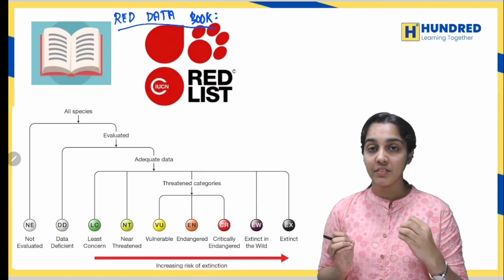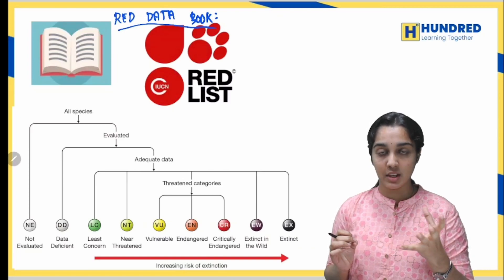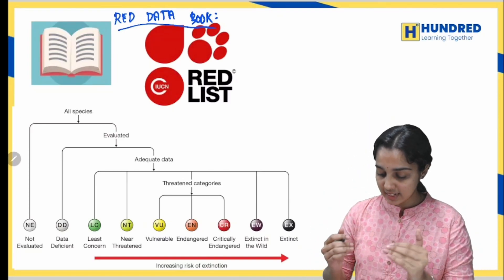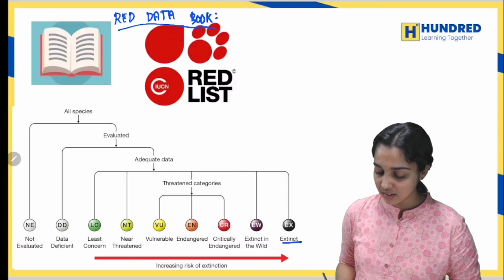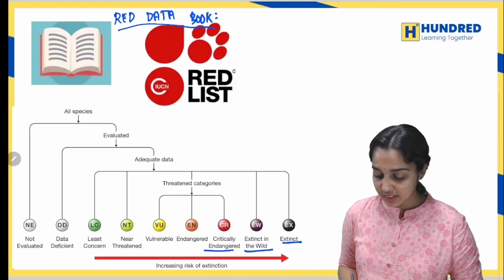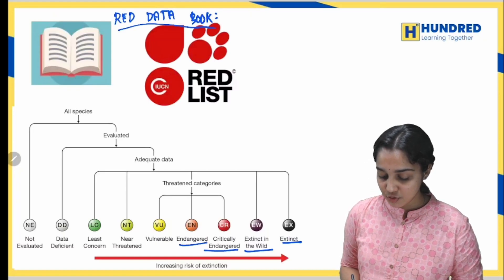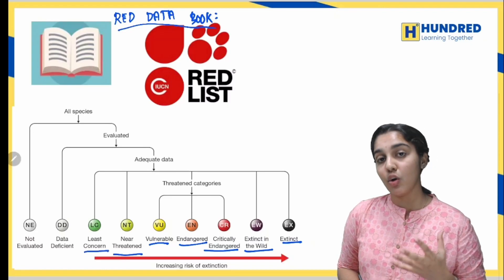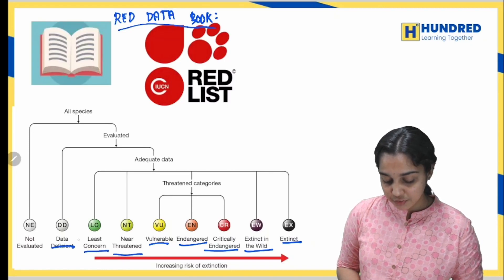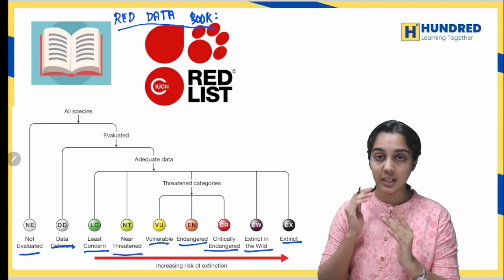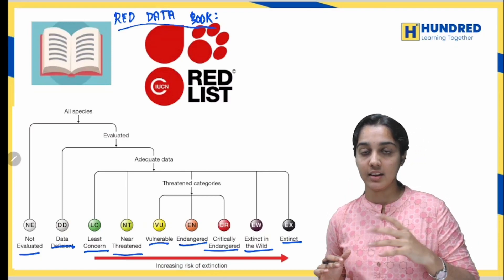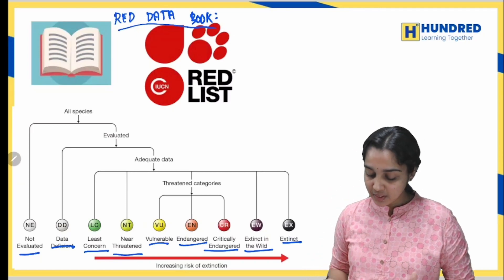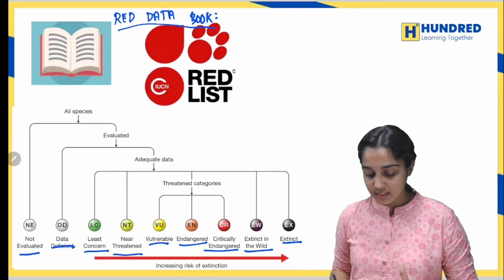In the Red Data Book, species are categorized as: Extinct, Extinct in the Wild, Critically Endangered, Endangered, Vulnerable, Near Threatened, Least Concern (or Lower Risk), Data Deficient, and Not Evaluated. The species are arranged by these categories — from higher risk to lower risk classification.